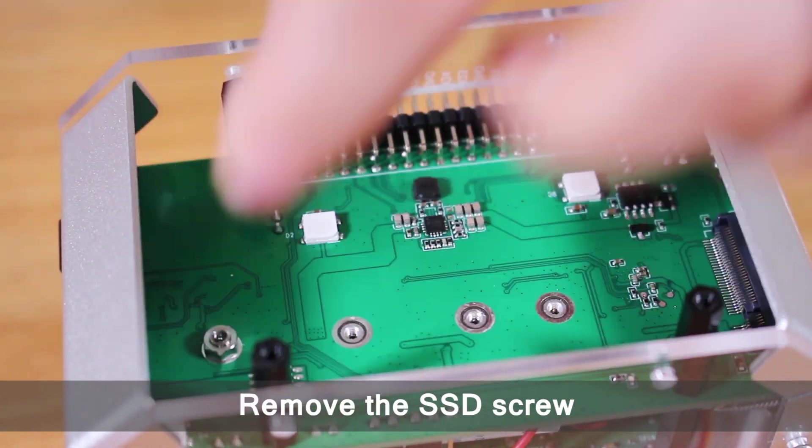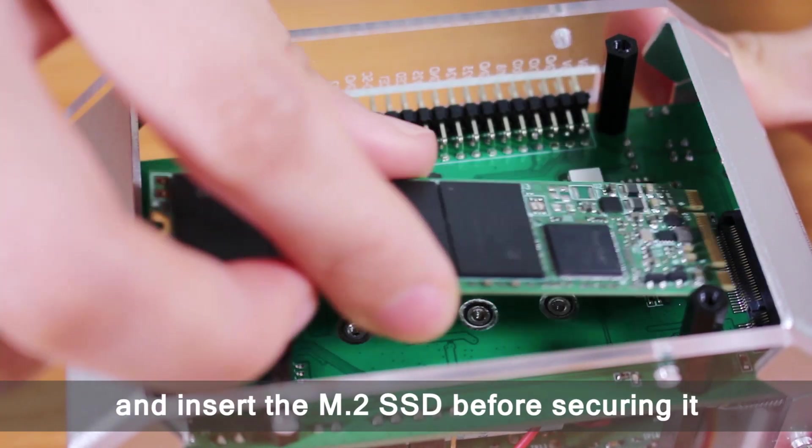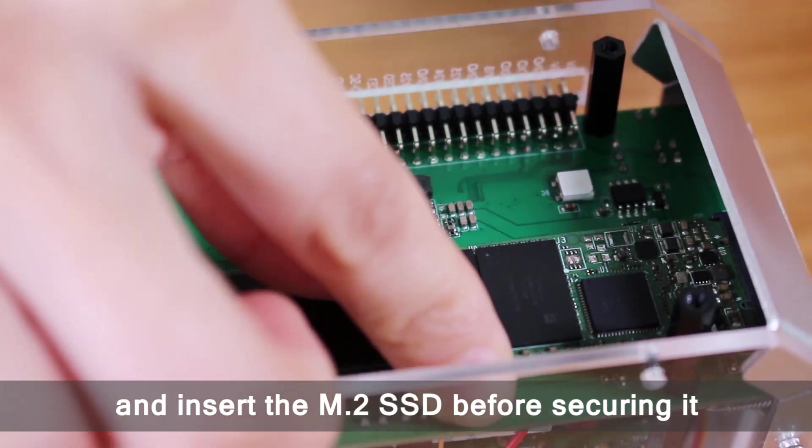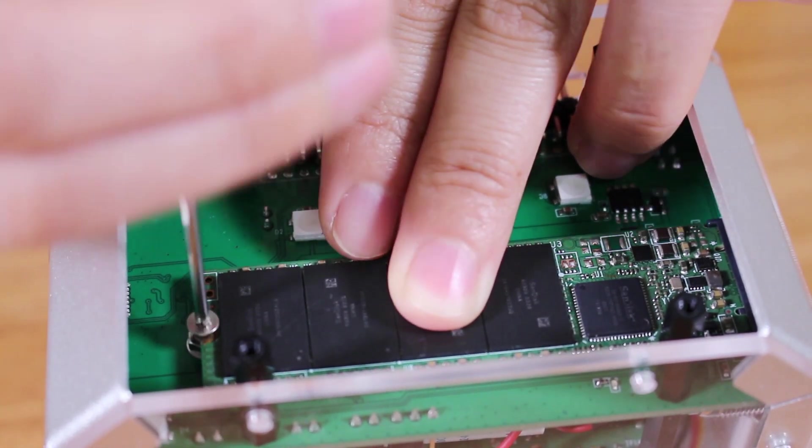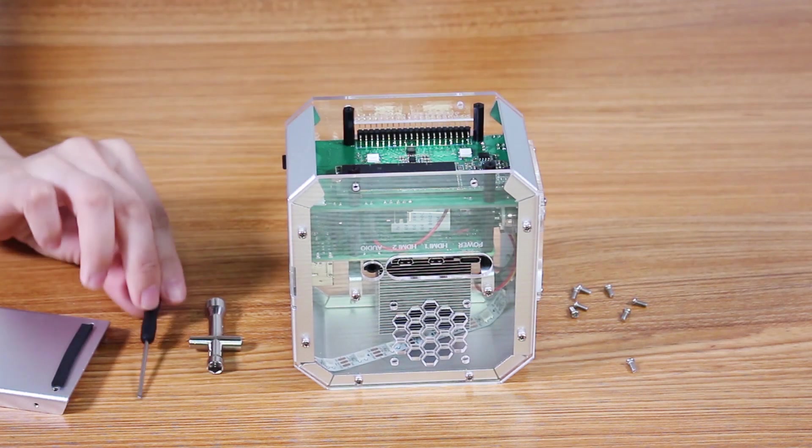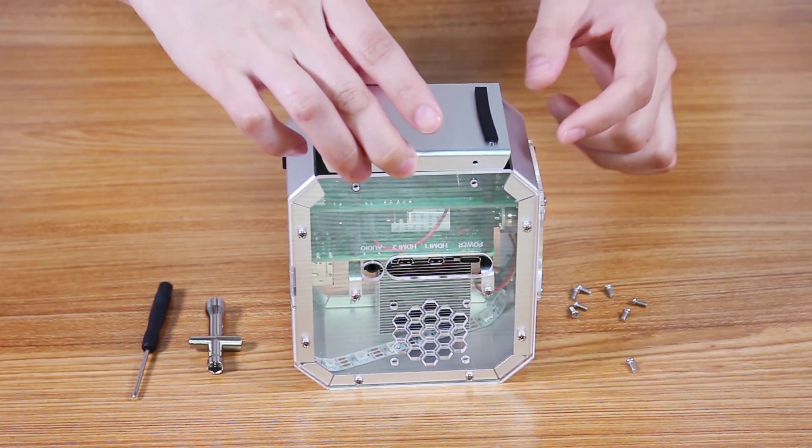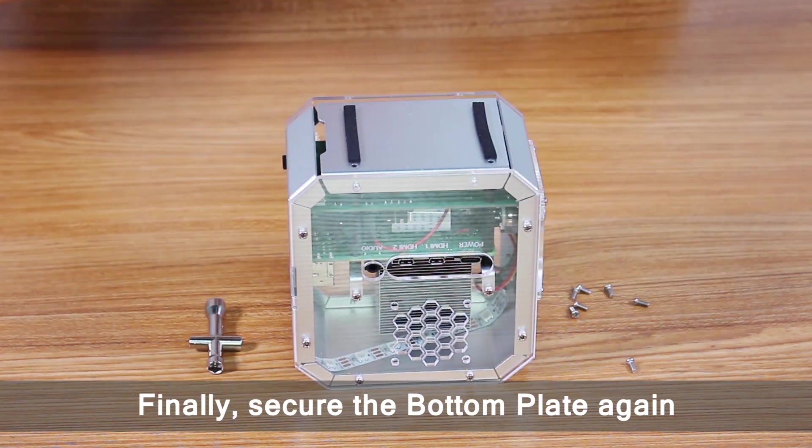Remove the SSD screw and insert the M2 SSD before securing it. Finally, secure the bottom plate again.